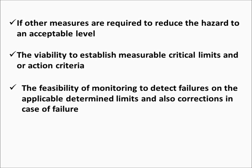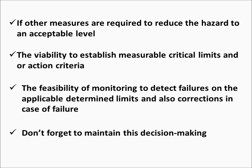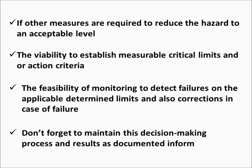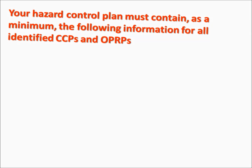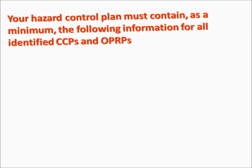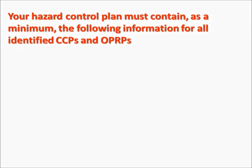Also consider the feasibility of monitoring to detect failures on the applicable determined limits, and corrections in case of failure. Don't forget to maintain this decision-making process and results as documented information. Your hazard control plan must contain, as a minimum, the following information for all identified CCPs and OPRPs.